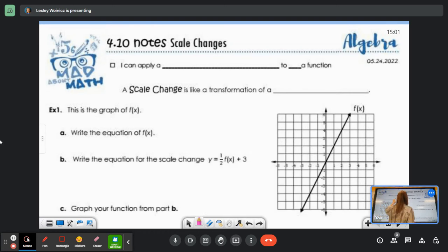We are talking about scale changes. We are going to apply a scale change to a function. You can think of a scale change as a transformation of a transformation. So we're going to take something that's already had a transformation done on it, and we're going to do another transformation on it. We're going to change something that's already been altered from its parent function form.